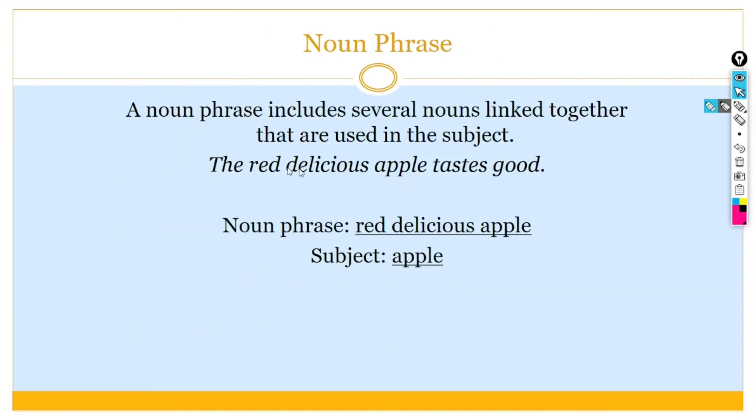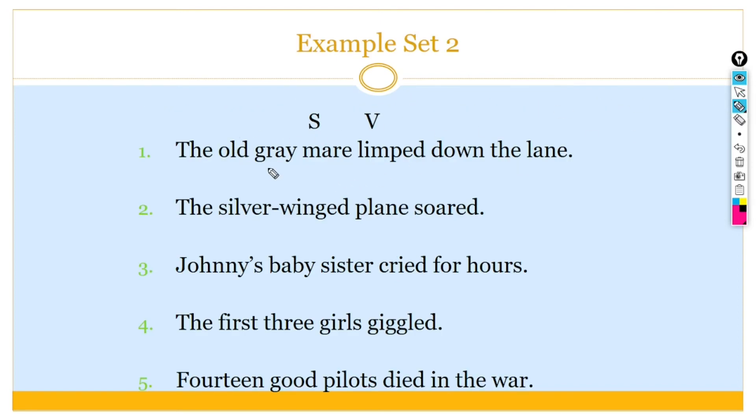Next is noun phrases. A noun phrase includes several words linked together that are used as a subject. In this sentence, the red delicious apple is a noun phrase. So, here, subject is the verb and the old grey mare is a subject. Limped down the lane.